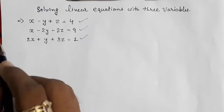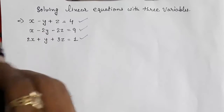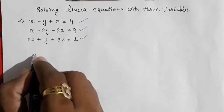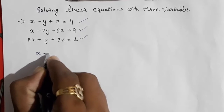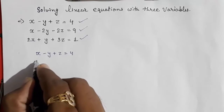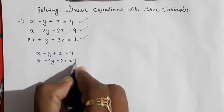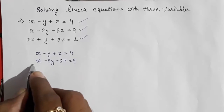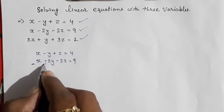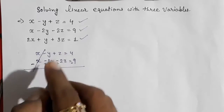First we have to eliminate from the first and the second equation. We can eliminate by making x the same, but here x is already the same, so directly we are going to eliminate the first and second equation. This gives x minus 2y minus 2z equals 9. We can directly eliminate and cancel this x, so we do subtraction and all signs will be changed.